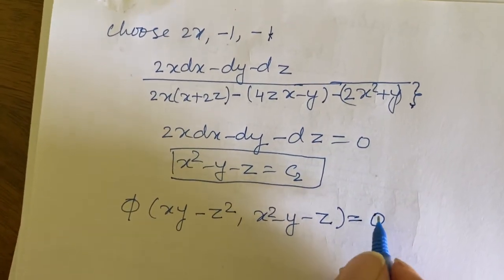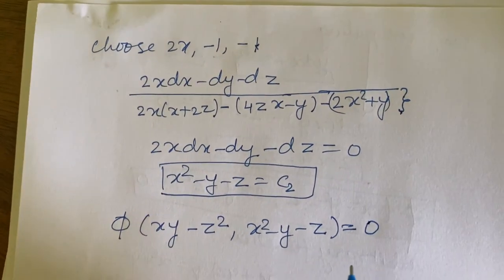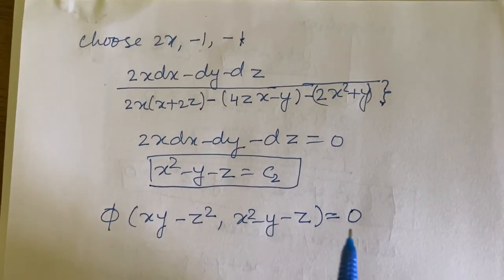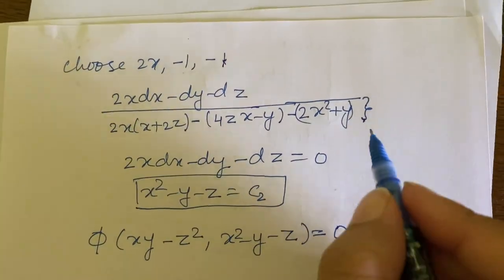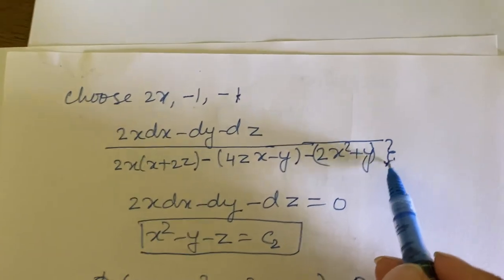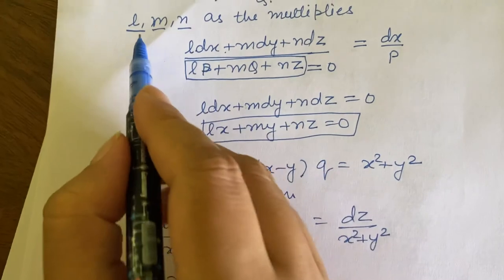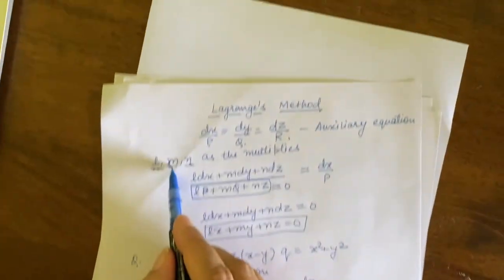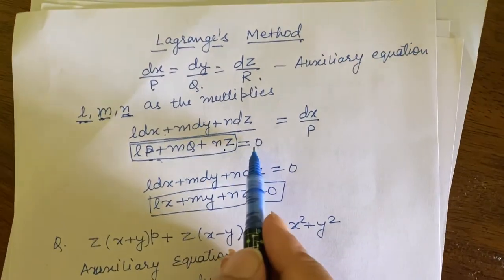I discussed many questions in the slide. You have to solve all the questions and let me know in the chat box which questions you are unable to solve. In all the questions, what we have to follow is to take the multipliers l, m, n and choose them in such a way that the denominator comes out to be 0.